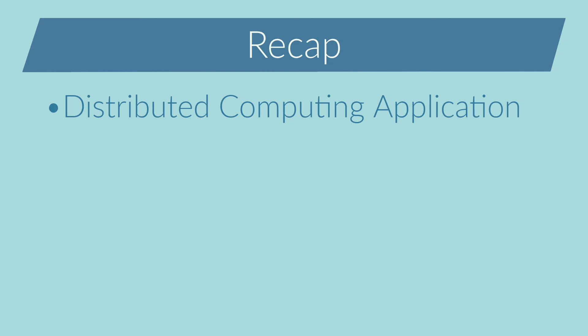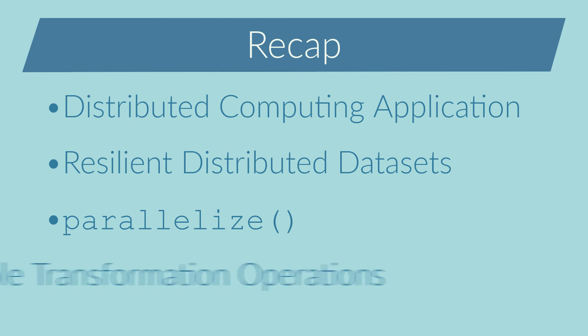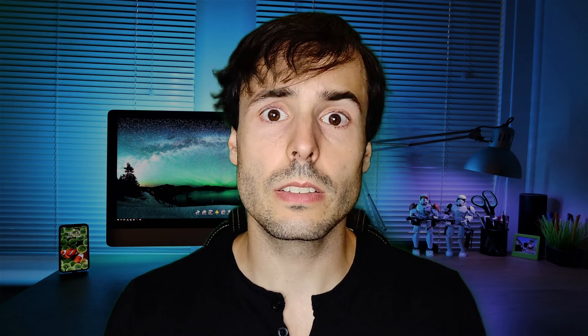Let's make a quick recap. Spark is a distributed computing application, so I must have a dataset split into multiple subsets — those are the RDDs, the Resilient Distributed Datasets. I can initialize an RDD with the parallelize method. I can chain multiple transformation operations such as map, flat map, filter, or reduce. I must have a final action for the pipeline to be triggered, such as count, sum, collect, or forEach. I have accumulators to share and aggregate values inside the pipeline between all the servers, and I have the broadcast to share read-only values with all the servers. That's all for this video — I hope you liked it, don't hesitate to leave a comment and click the thumbs up. See you in another video, bye!